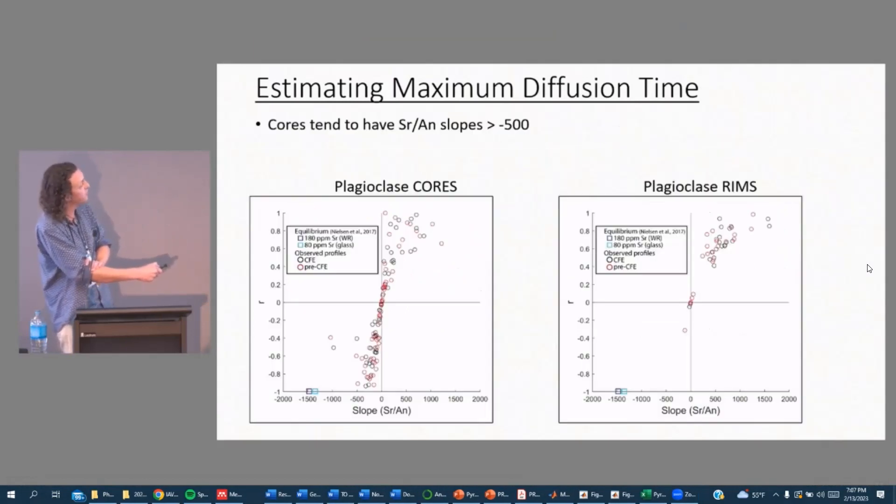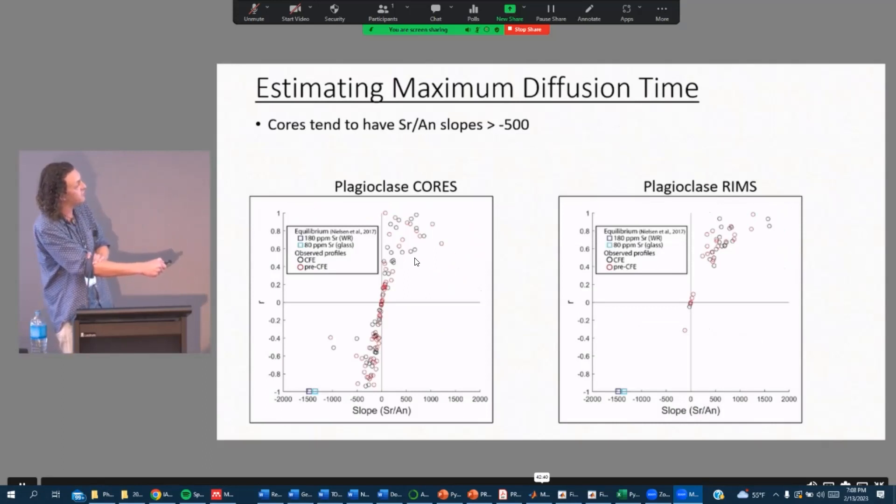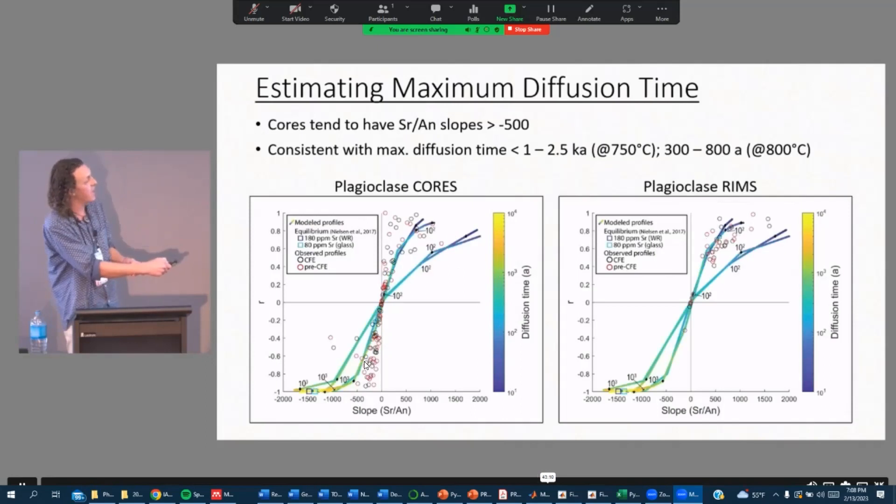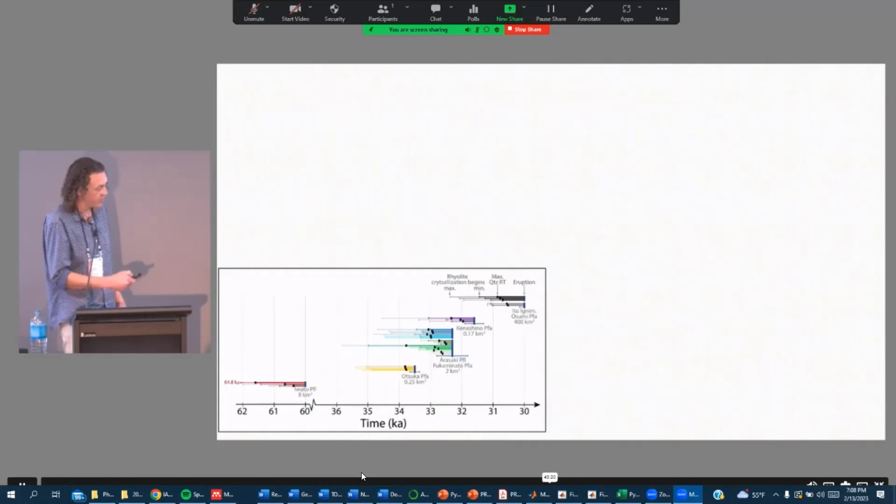So come back to the observed values for the cores here. I want to point out that there's no difference between the slopes of the caldera forming versus pre-caldera, and the slopes tend to be less than negative 500 and nowhere near what we'd expect from equilibrium. If we overlay those models that I just showed you that animation of, color coded by diffusion time going from blue to yellow, you can see that the observed slope of about negative 500 is less than 2500 years according to this modeling. And then if we were to look at it at 800 degrees Celsius, then we're looking at timescales of only 300 to 800 years.